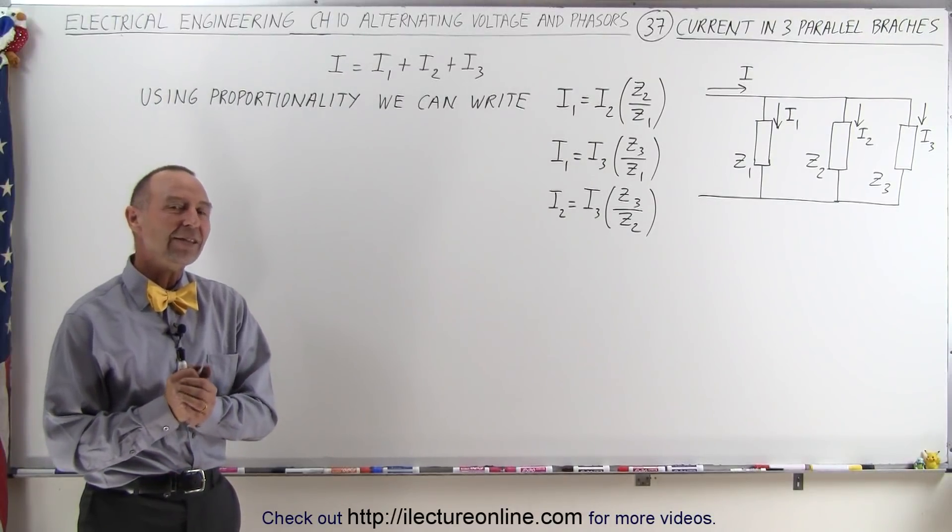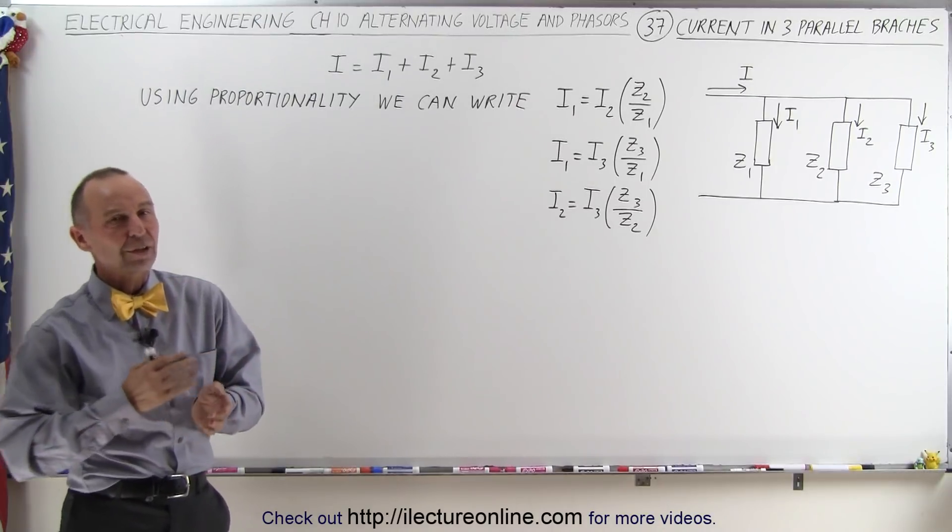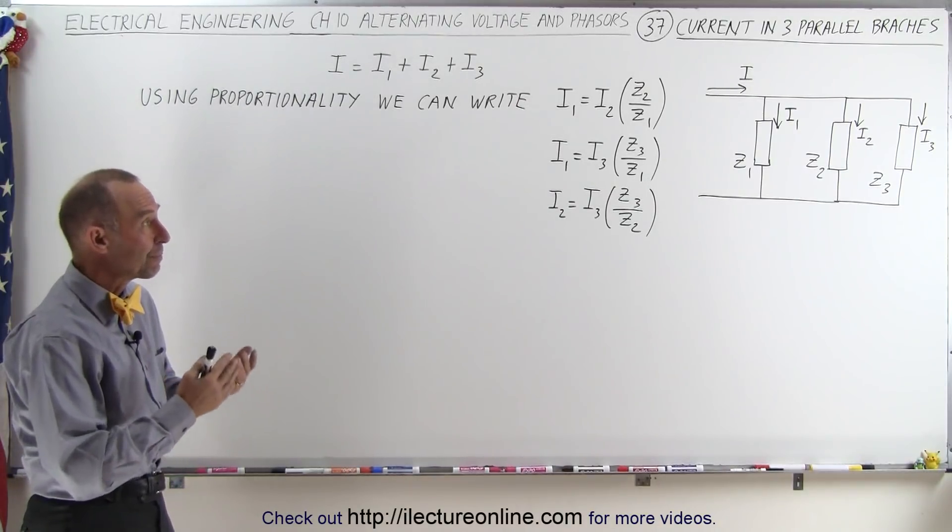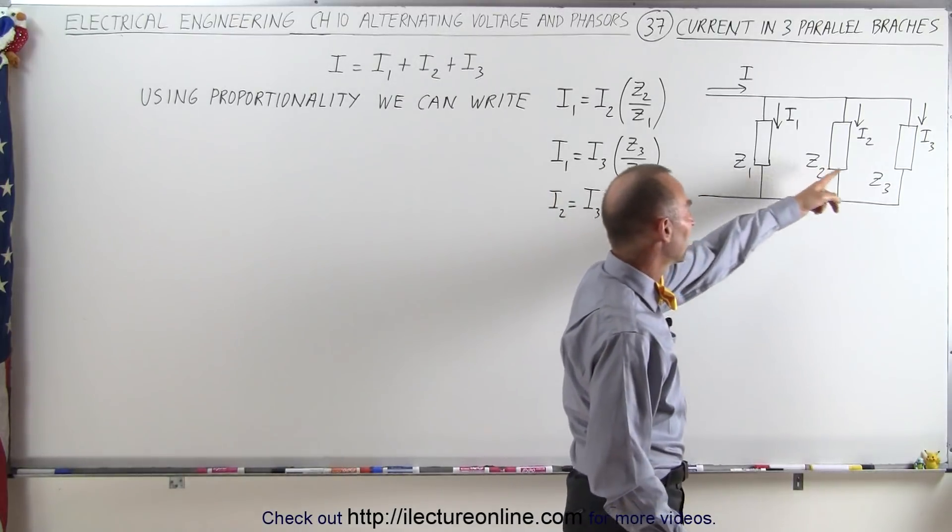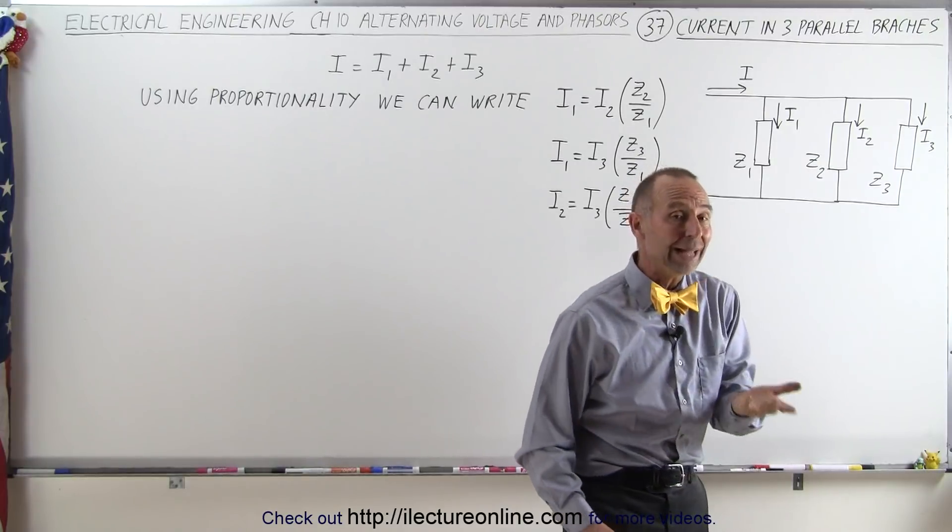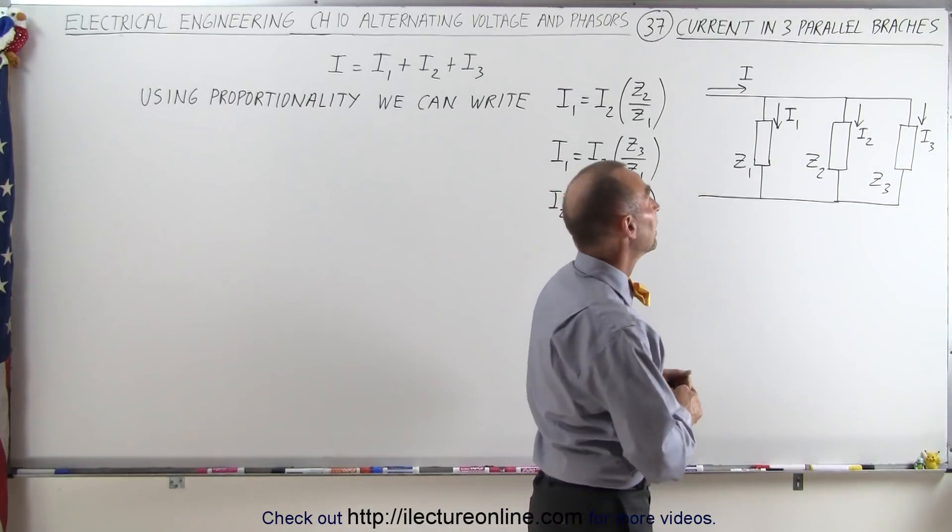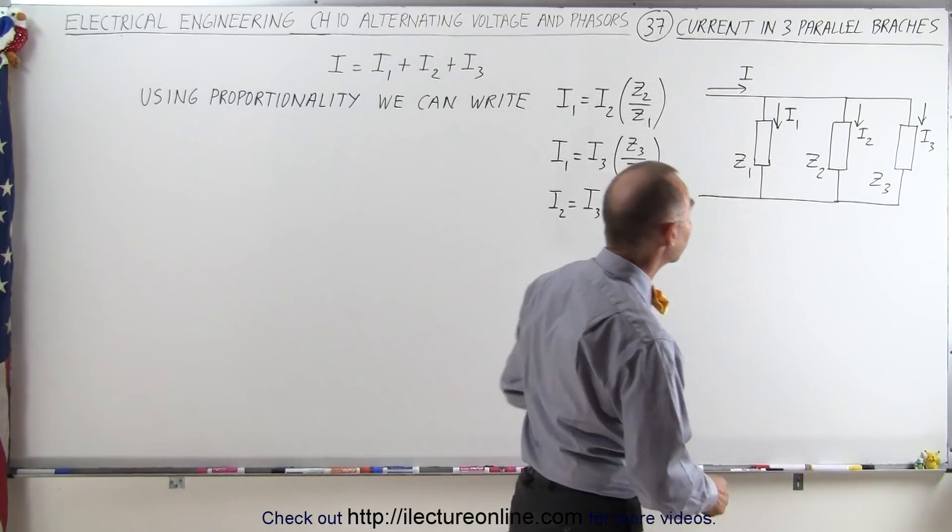Welcome to our lecture online. Now let's try to figure out how to determine the current in any one of the three branches if we have three parallel branches. Notice each of the parallel branches has an impedance Z1, Z2, and Z3, and a corresponding current I1, I2, and I3.